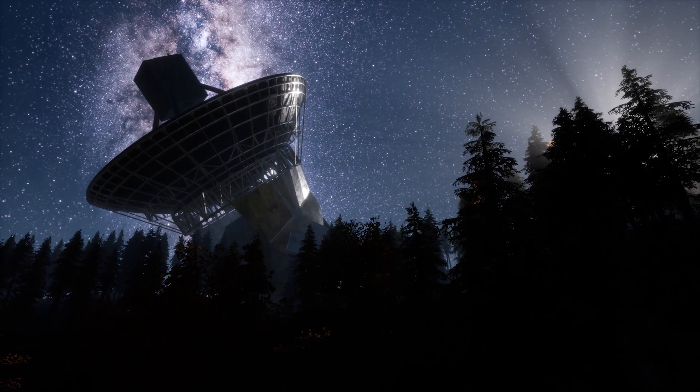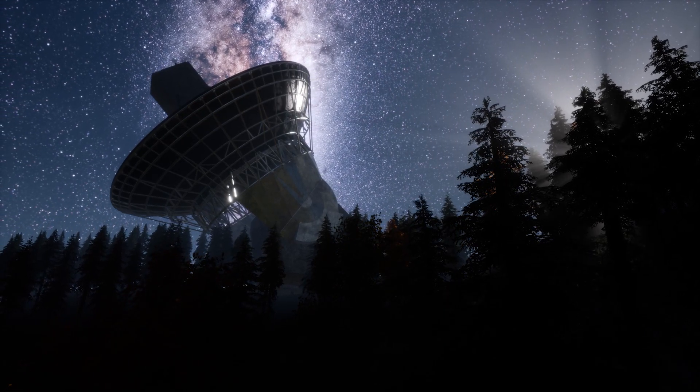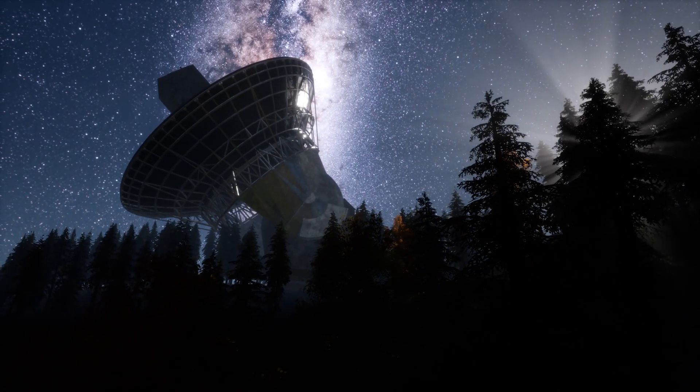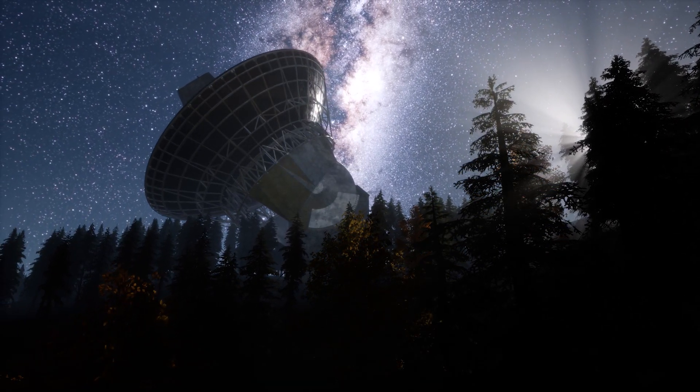From where Sagittarius A sits, 26,000 light years away at the center of the Milky Way, only 1 in 10 billion photons of visible light can reach Earth. Most are absorbed by gas in the way.